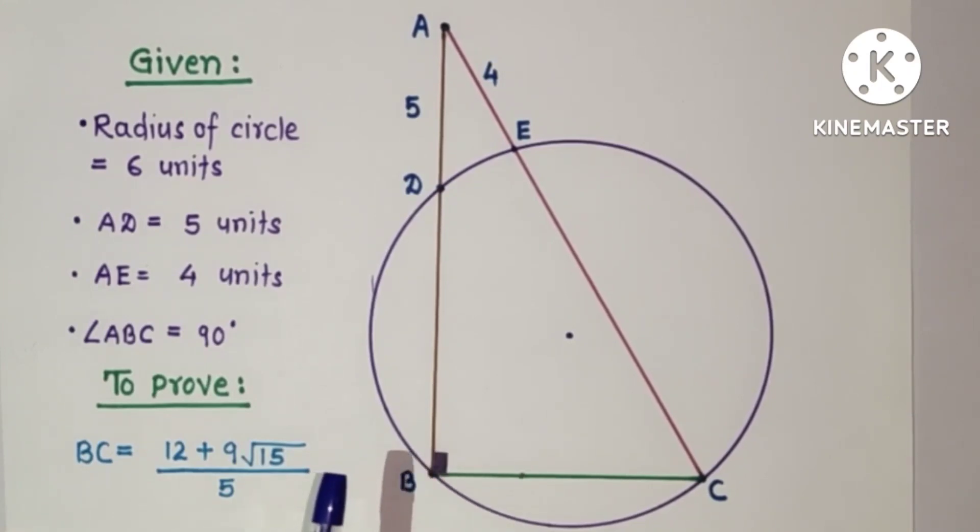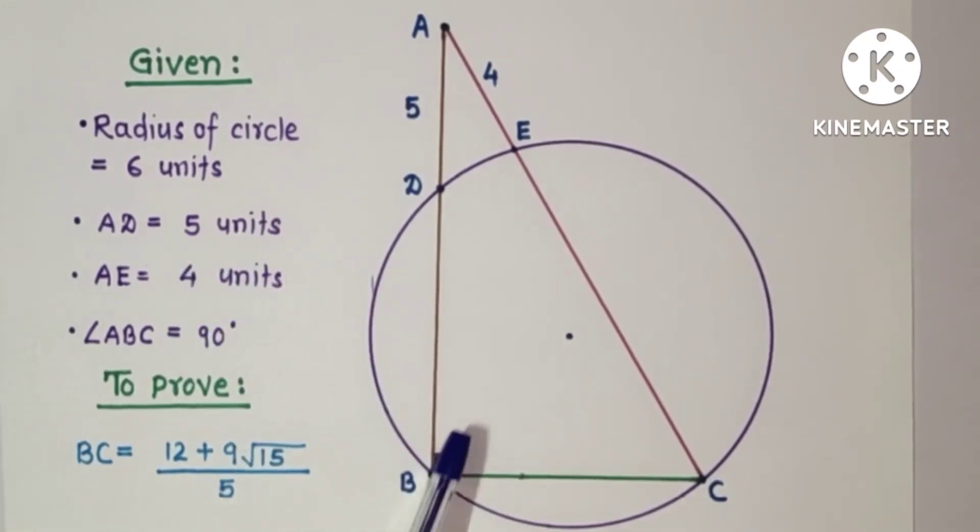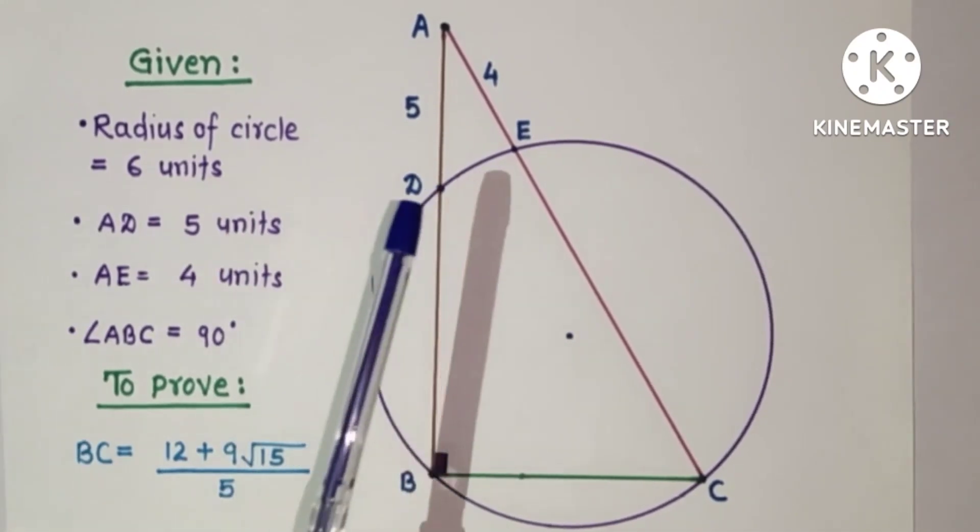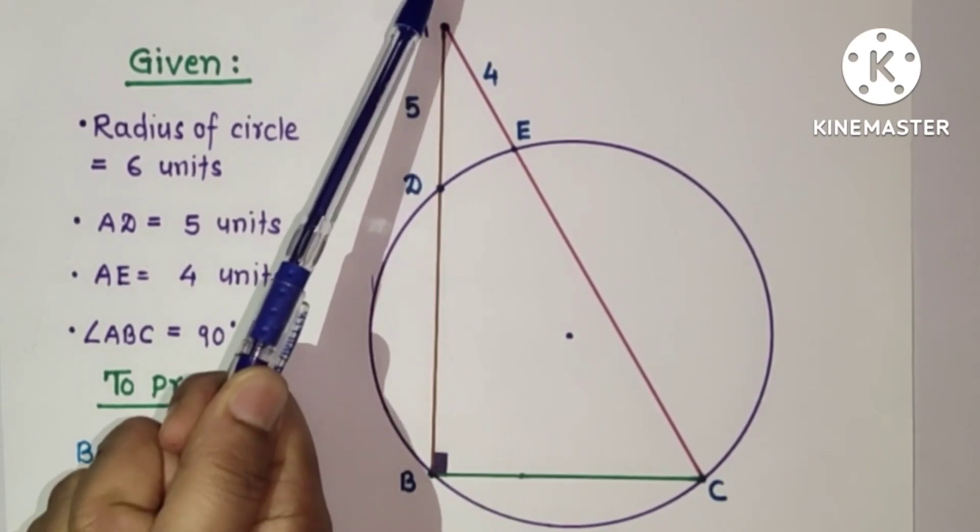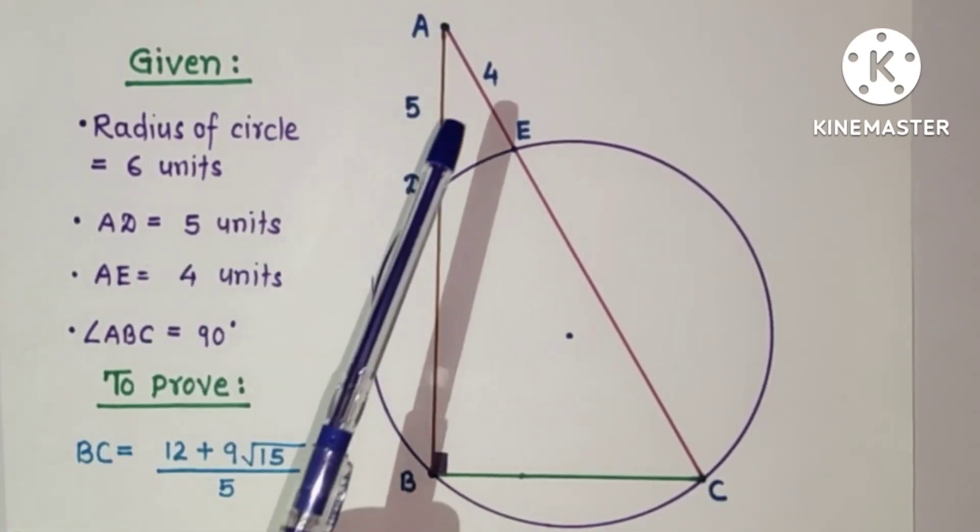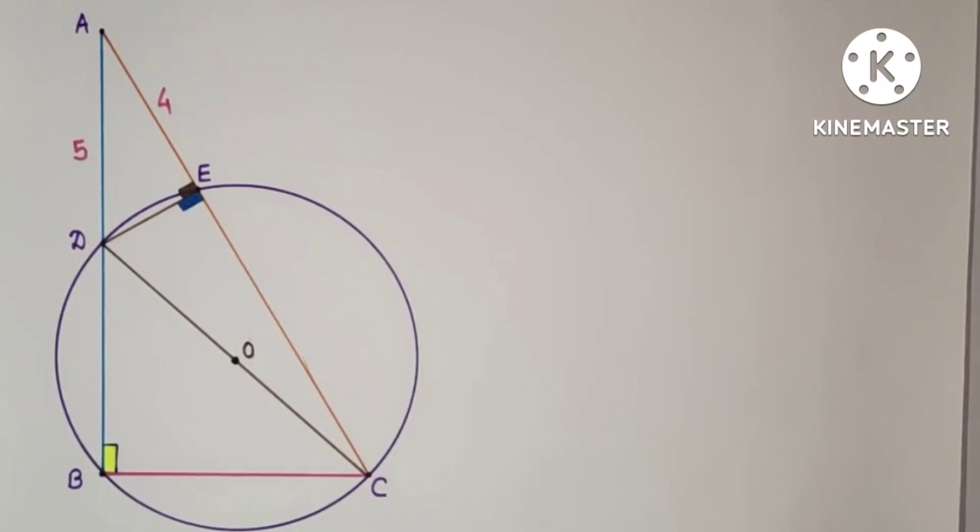Since opposite angles of cyclic quadrilaterals are supplementary, the sum of these two will be 180, therefore angle DEC will be right angle. Then triangle AED will be a right-angled triangle. Here is the diagram: DC joined, DE joined, BDEC is a cyclic quadrilateral.